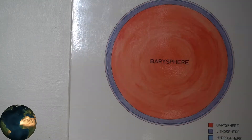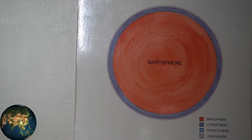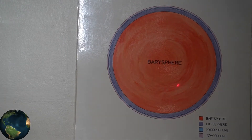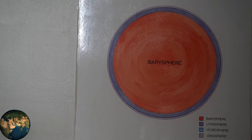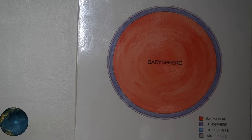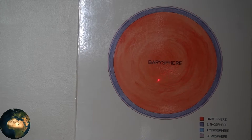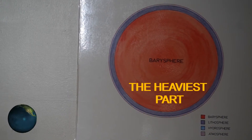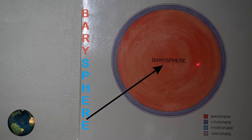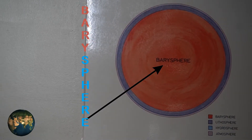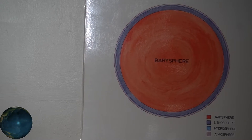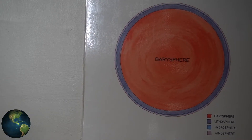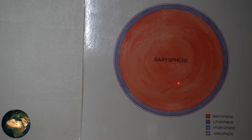I'll show you a chart. Now here is my chart. The part nearest the center was the heaviest part. It has been called the barisphere. The word comes from the Greek word 'baros,' which means heavy.